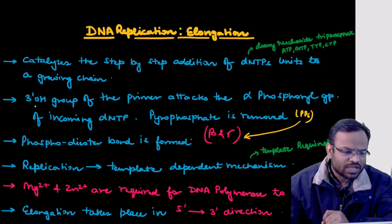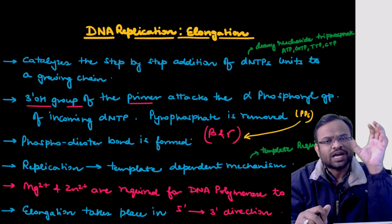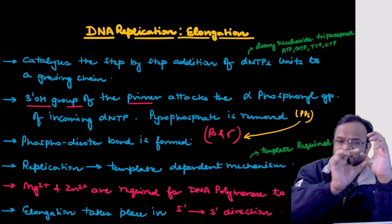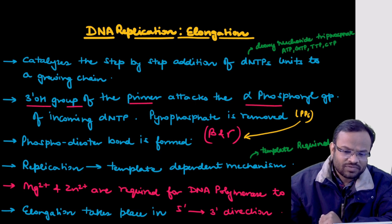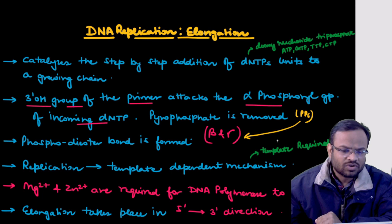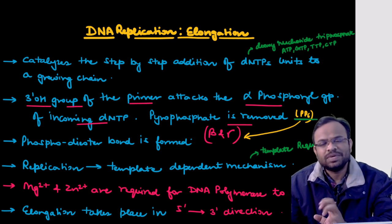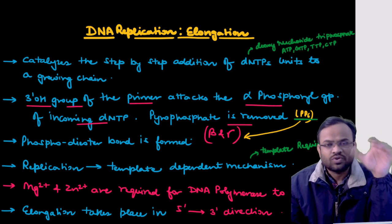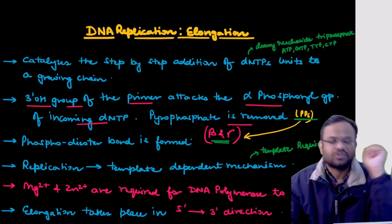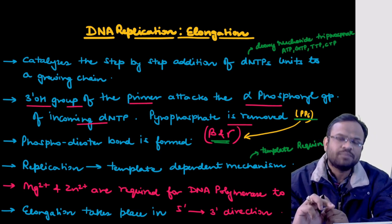The primer, as you know, is made up of RNA, so it consists of RNTPs. The same mechanism applies: the 3' OH of the primer's RNTP attacks the incoming dNTP's alpha phosphoryl group. Because of this, pyrophosphate (PPi) — meaning the beta and gamma phosphates — is removed simultaneously.